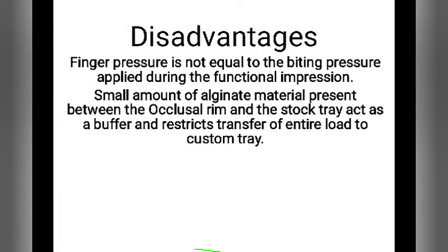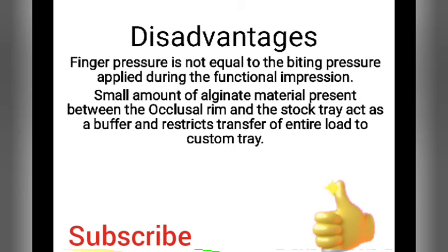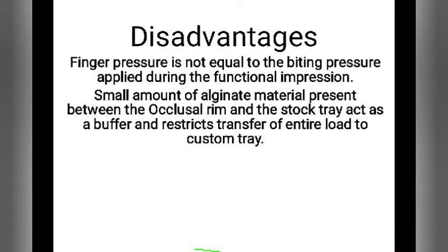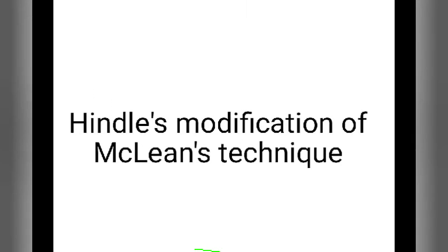What are the disadvantages of Maclean's technique? First, finger pressure is not equal to the biting pressure applied during the functional impression. Second, a small amount of alginate material present between the occlusal rim and the stock tray acts as a buffer and restricts the transfer of the entire load to the custom tray. To overcome these disadvantages, we have the handles modification of Maclean's technique.